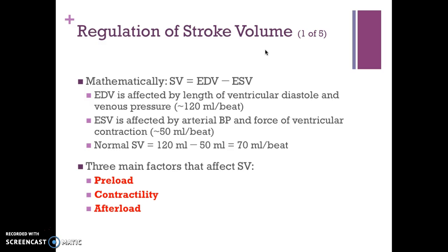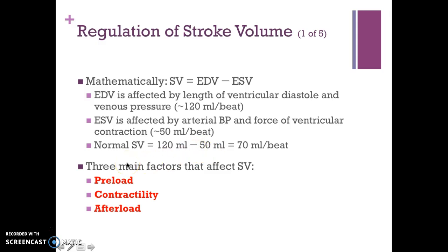Stroke volume regulation: stroke volume is the end-diastolic volume minus the end-systolic volume. End-diastolic volume is affected by the length of ventricular diastole and venous pressure. End-systolic volume is affected by arterial blood pressure and the force of ventricular contraction. Normal stroke volume is 120 milliliters minus 50 milliliters, or 70 milliliters per beat. The three main factors affecting stroke volume are preload, contractility, and afterload.